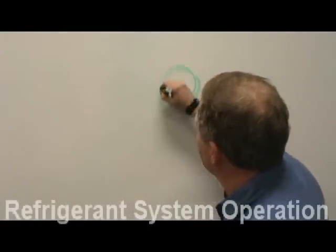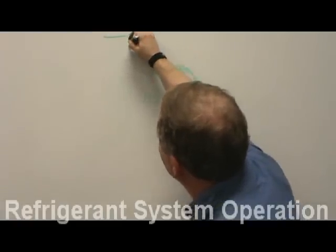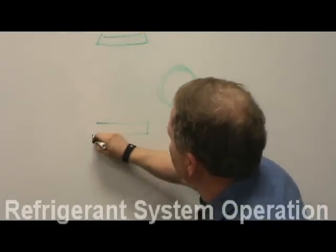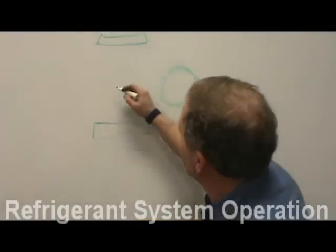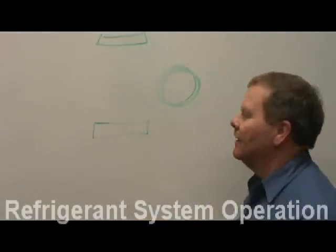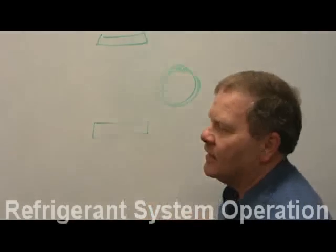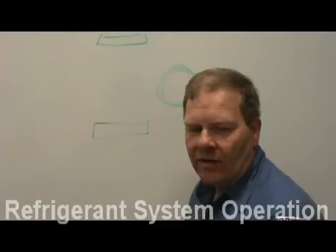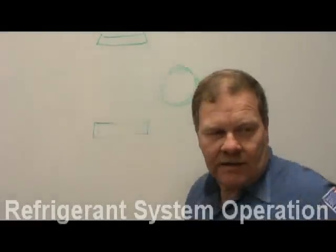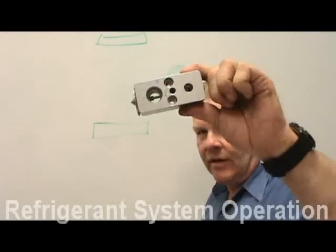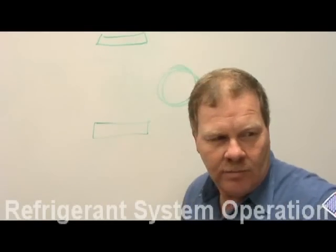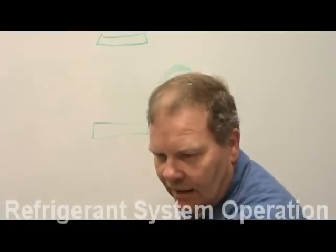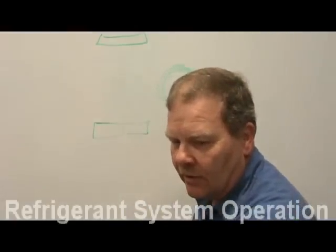This right here is a compressor, this is an evaporator, and this is a condenser. Let's say this is a fixed orifice system. Why do we call it a fixed orifice? Instead of having an expansion valve, it's going to have an orifice tube. The orifice tube is a little plastic thing about this big — it looks like a screen.